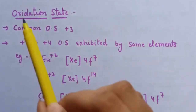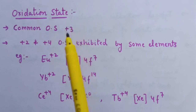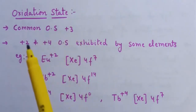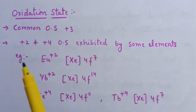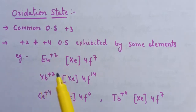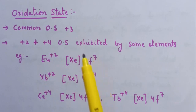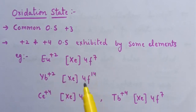Next property is oxidation state. For lanthanoids, the common oxidation state is +3, shown by all lanthanoids. Besides +3, lanthanoids also show +2 and +4 oxidation states, exhibited by some elements. For example, europium shows +2 oxidation state because in the +2 state, the configuration of europium is [Xe] 4f⁷ — the f orbital is half-filled, a stable configuration. Similarly, ytterbium in +2 oxidation state has electronic configuration [Xe] 4f¹⁴ — f orbital is fully filled, which is stable.